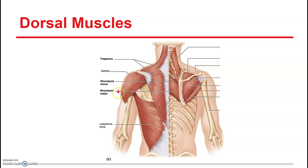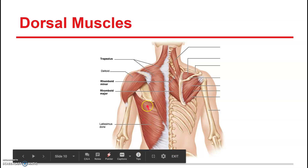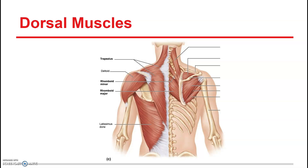Another muscle is the deltoid — there's the posterior, medial, and anterior deltoid, considered as one muscle group. The biggest movement the deltoid does is abduction, moving your arm away from your trunk. Then we have the latissimus dorsi, which are muscles involved in parts of a pushup and certain types of twists.